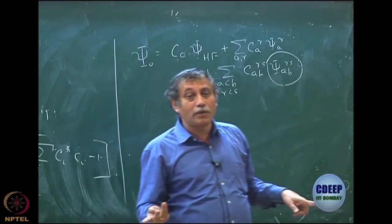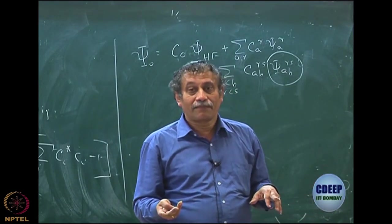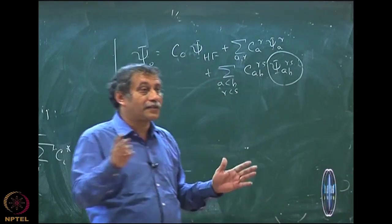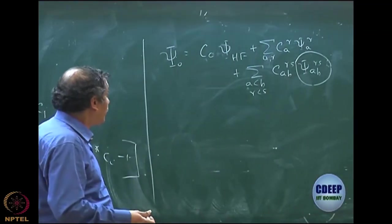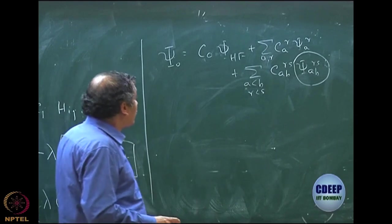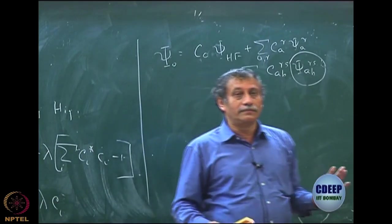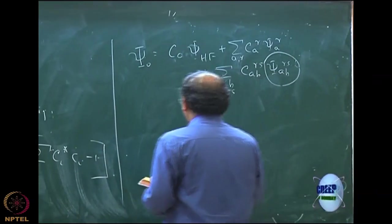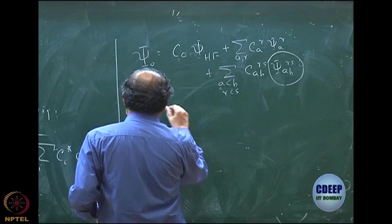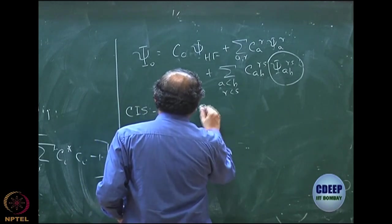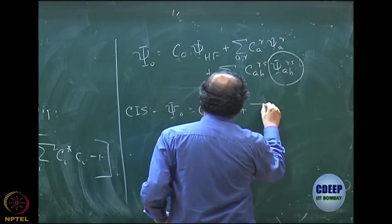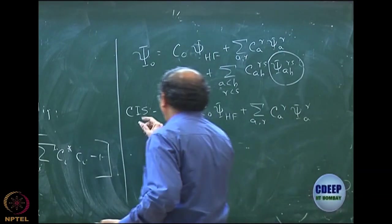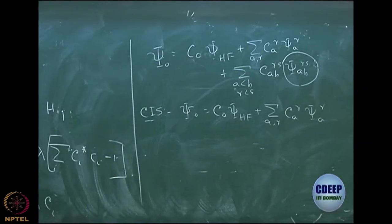If you have to take only one class of determinants apart from Hartree-Fock, you choose doubles — that is the first choice based on physics. Then you have a choice of what will be your second class: will you take singles or triples? Singles you will not eliminate. Brillouin's theorem only shows that the Hamiltonian matrix element between Hartree-Fock and singly excited is 0, and you will see that singles will still contribute if you have doubles. But first let me convince you that only singles is not good because of Brillouin's theorem.